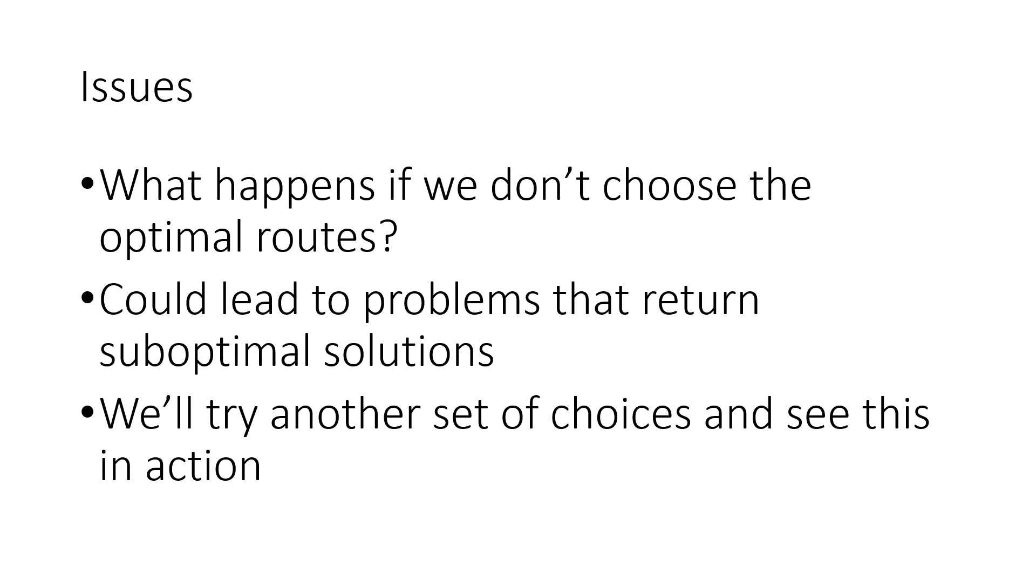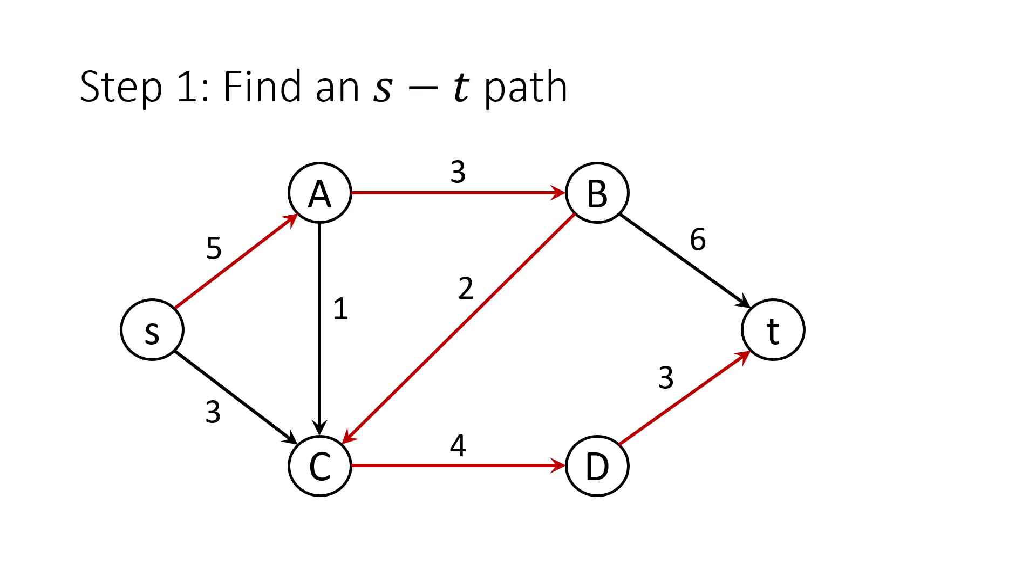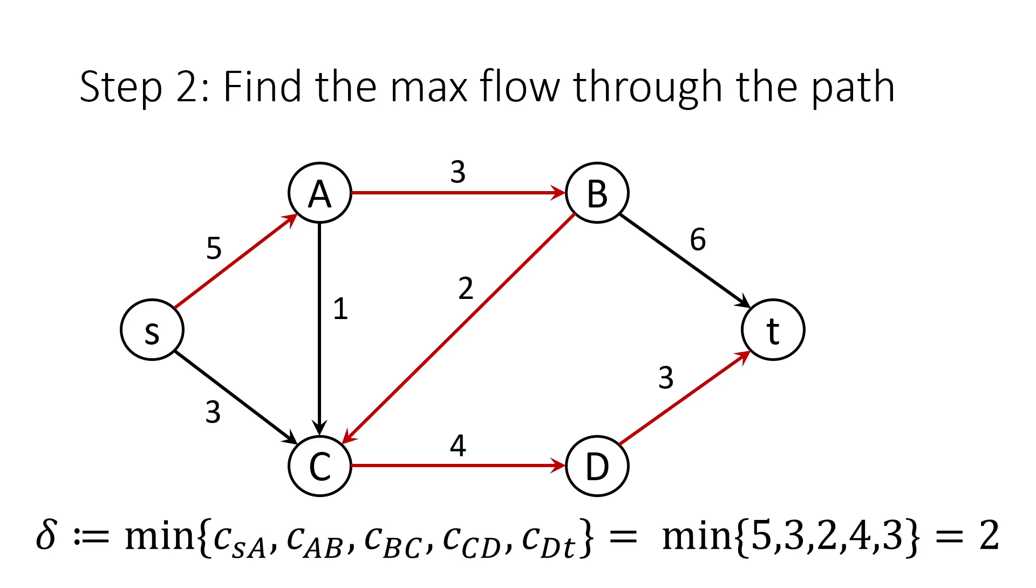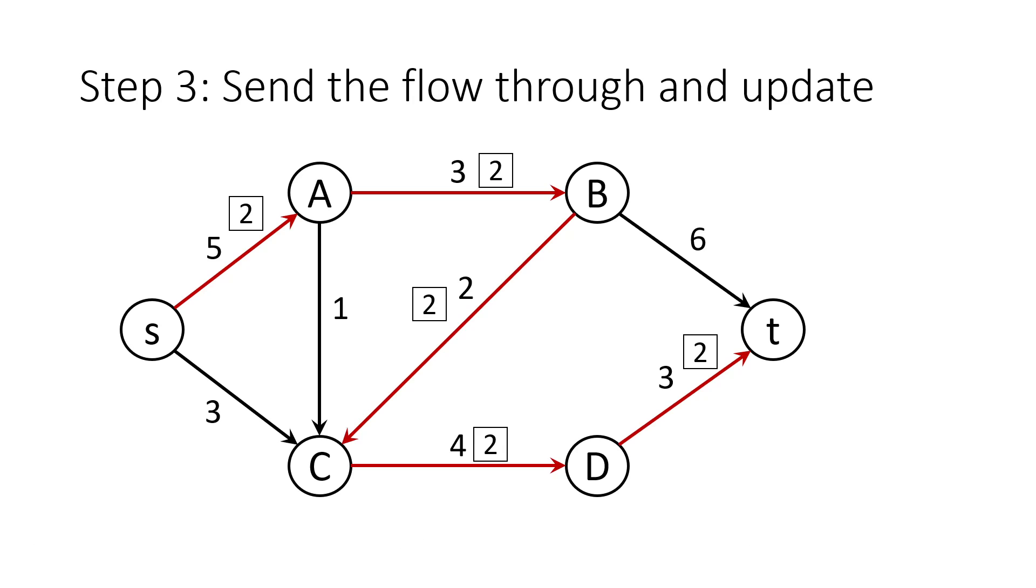Now, let's try running our naive algorithm again with different choices so that we can pinpoint exactly where it breaks down. We'll start off with a different ST path this time, using a backwards edge that we had previously ignored. The minimum of these capacities is going to be the capacity of this new edge, so it'll be 2. Now, we send the flow through and update.